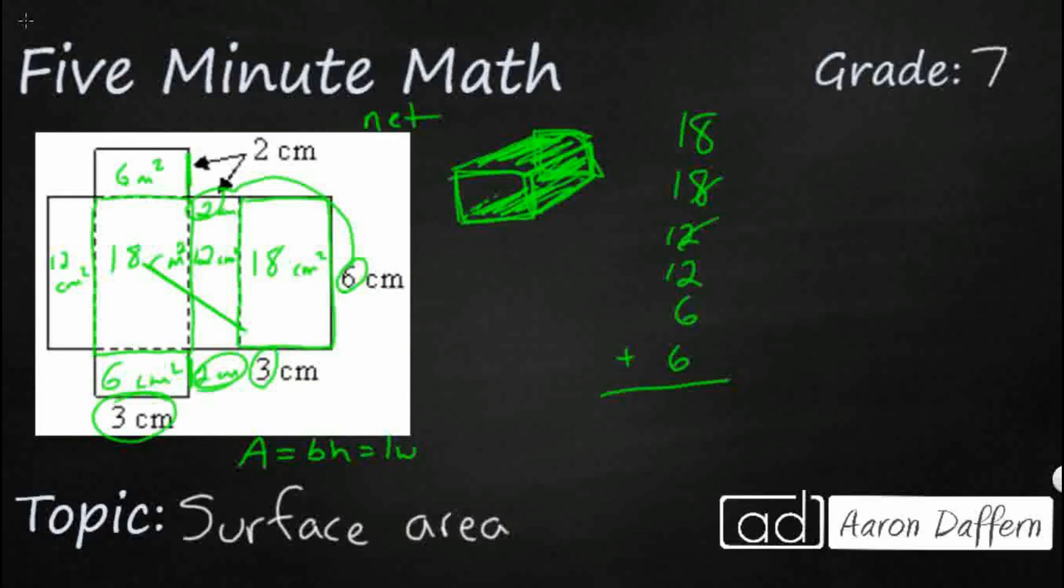And so we're just going to add all these up, and we are going to get our answer. So adding these together: 72. Now we're just dealing with surface area, so it's going to be 72 centimeters squared because we're adding up a whole bunch of different areas.